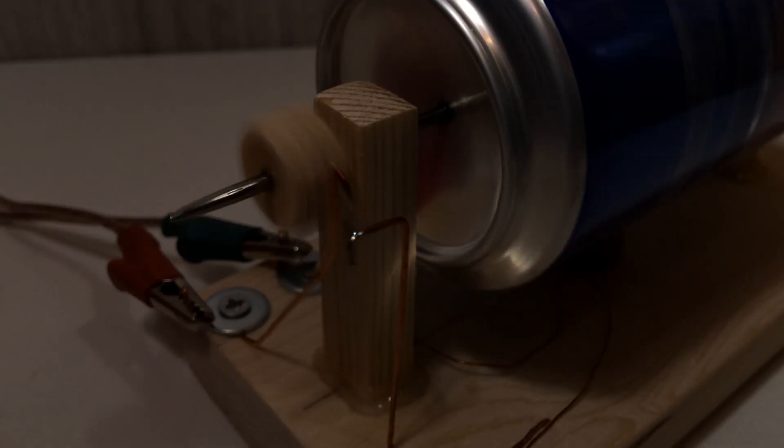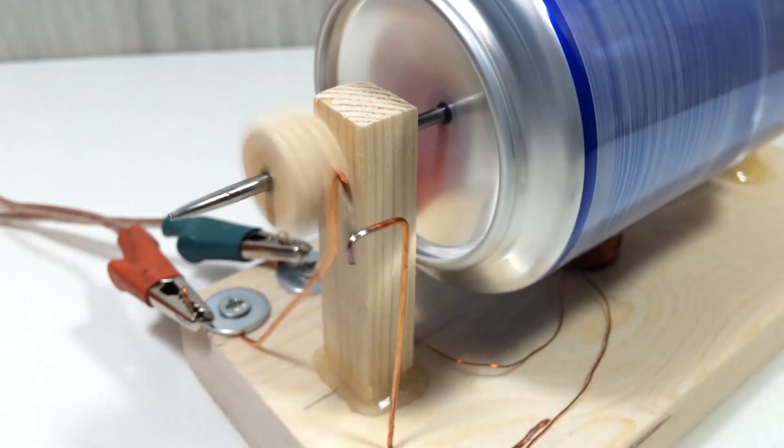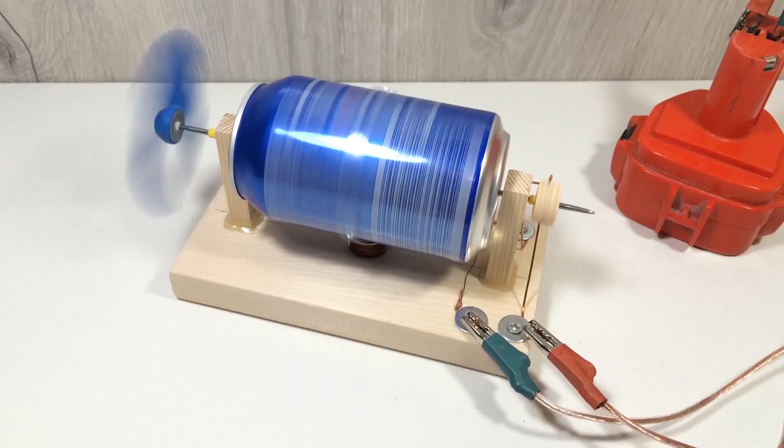You can experiment by changing the size of the coil, using different magnets, or adjusting the breaker tension to see how it affects speed and power.